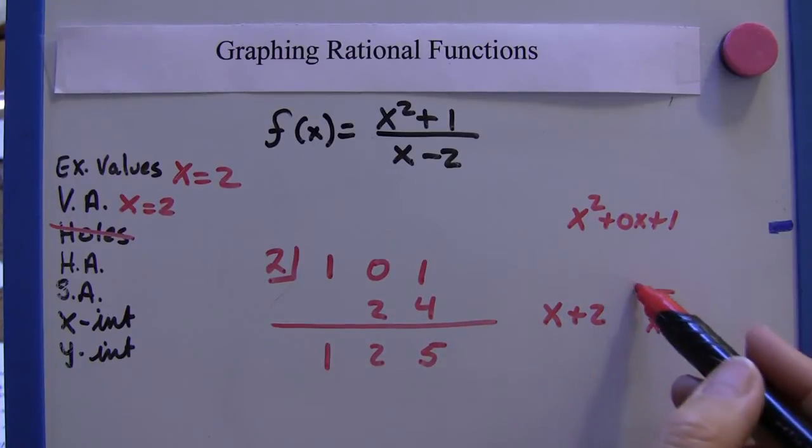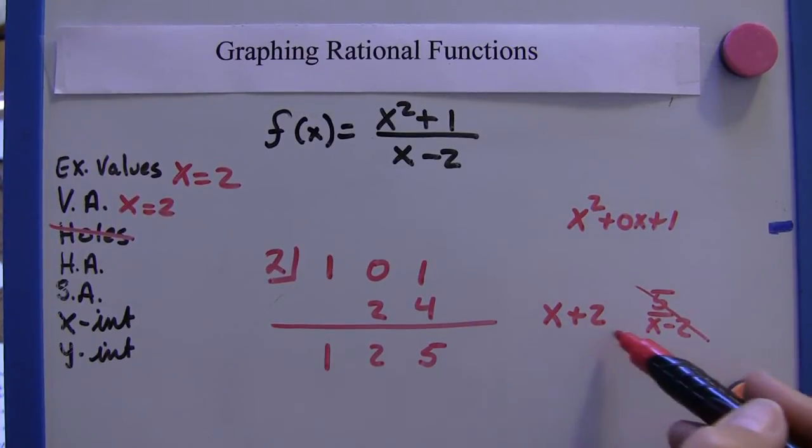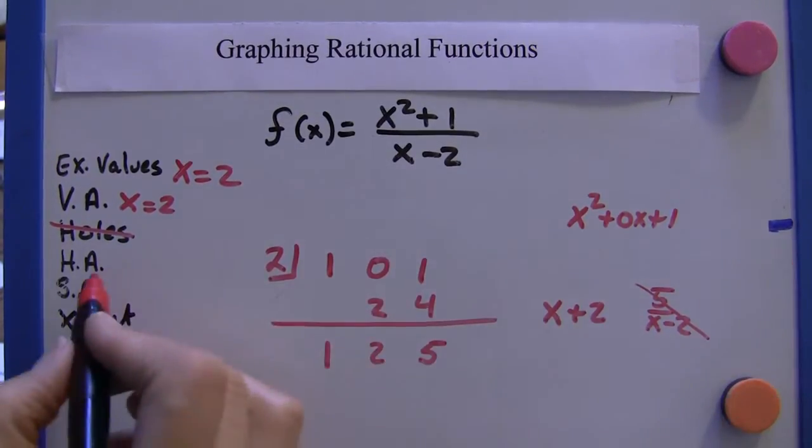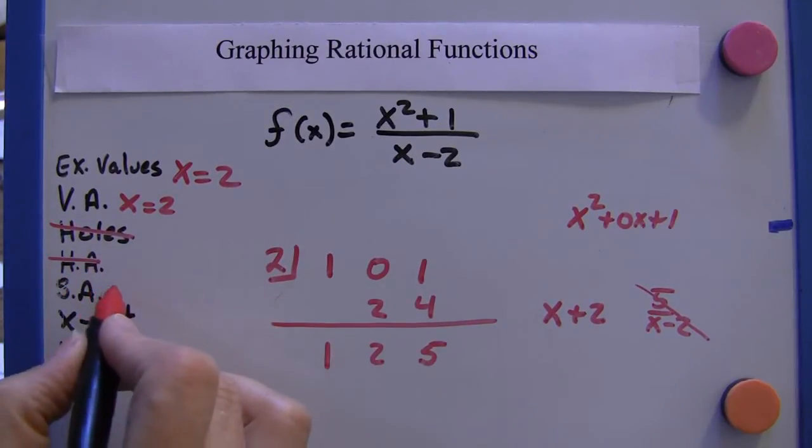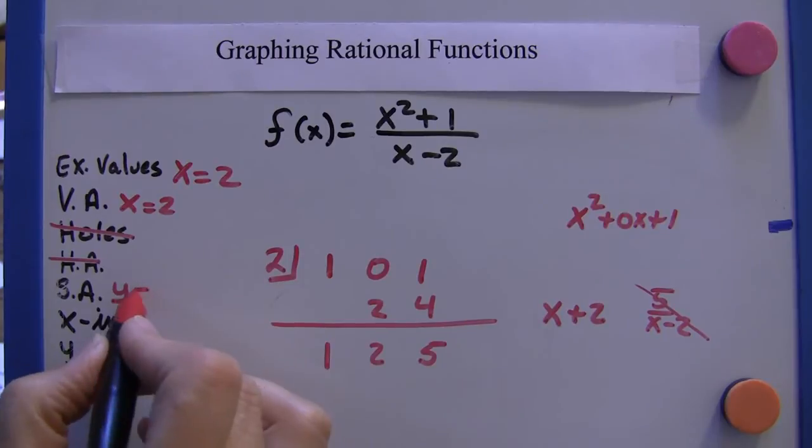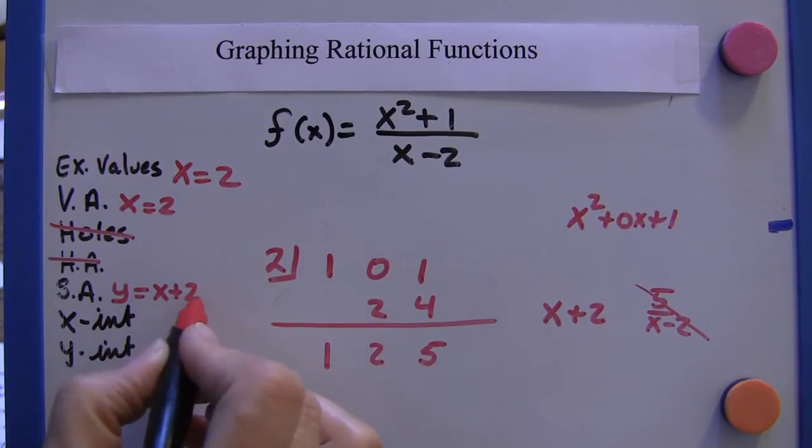And we're not going to concern ourselves with the remainder. We're just interested in this. Well, if there's a slant asymptote, there's no horizontal asymptote. So there's a slant asymptote at y equals x plus two.